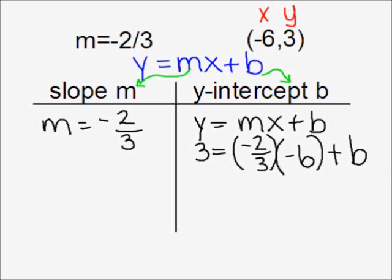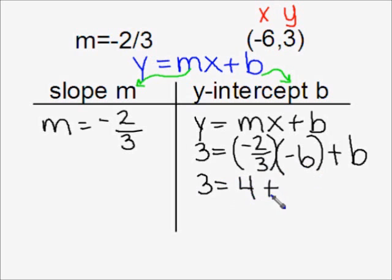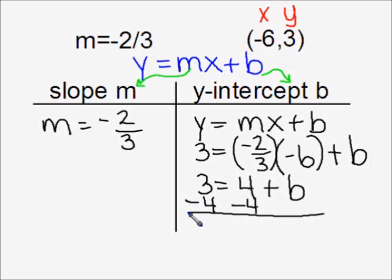Order of operations tells us to multiply first. Negative two-thirds times negative six is a positive four. So to get b by itself, we'll undo the add four by subtracting four, and that gives us that b is equal to negative one.